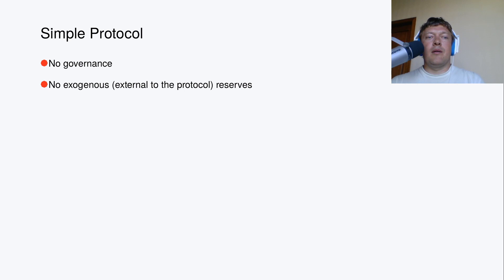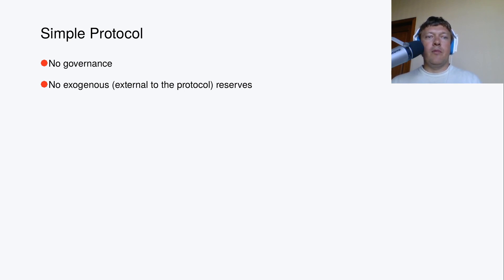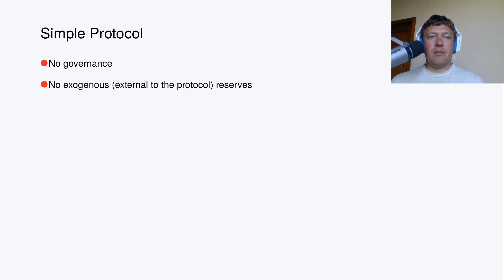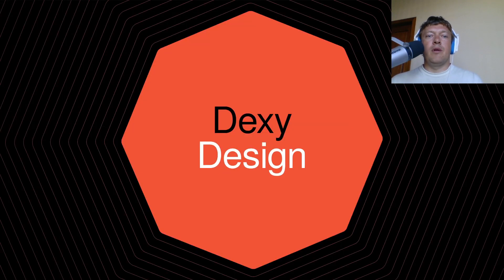The goal was also to have a simple protocol without governance, because in the long term governance could be not so good. There are many cases around about that — in the long term it is better to avoid unexpected events which governance may cause. Also there are no external reserves, as practice shows this is also quite a bad thing, and external reserves always means a centralized protocol.